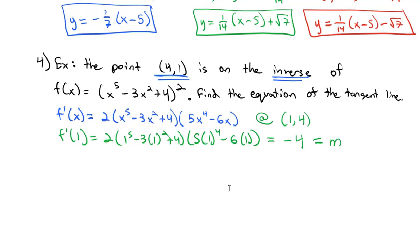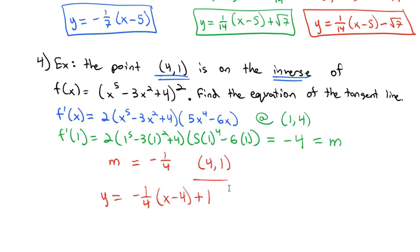So if the slope of the function at x equals 1 is negative 4, then the slope of the inverse at the switched coordinates is the reciprocal: negative 1/4. The point we're working with on the inverse is (4, 1), so the equation is y equals negative 1/4 times (x minus 4) plus 1. That's tangent to the inverse of our function at the point (4, 1).